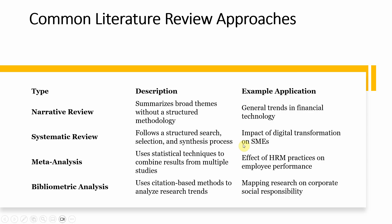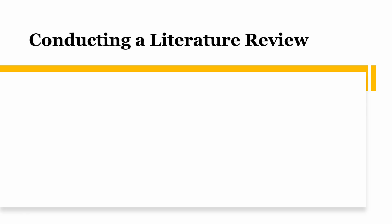Meta-analysis uses statistical techniques to combine results from existing research. For example, if you want to find out how HR practices influence employee performance, and there are maybe 100 papers assessing this relationship, you use statistical techniques to find a summary of the combined results from those multiple studies. Finally, bibliometric analysis uses citation-based methods to analyze research trends — for example, mapping research on corporate social responsibility.